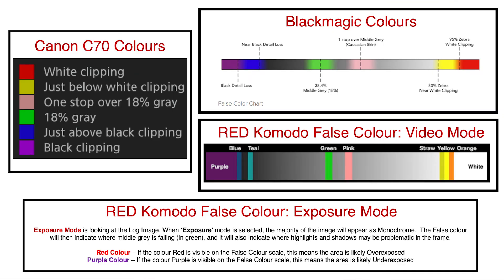Most manufacturers will use similar colors to represent certain IRE values, and this makes a false color scale easy to use when moving and shooting across different camera systems and manufacturers.